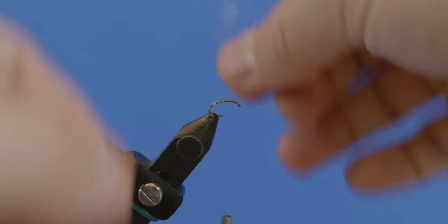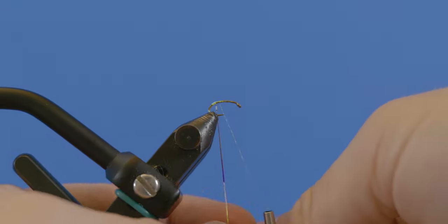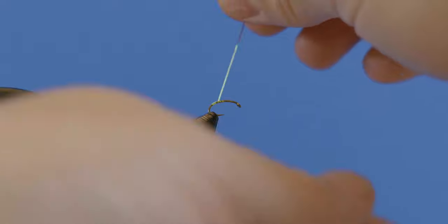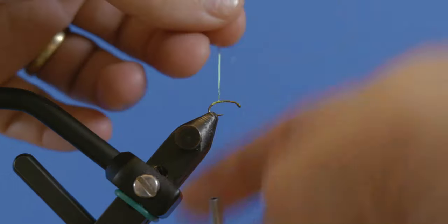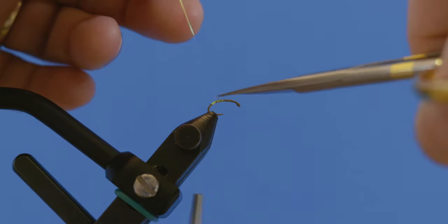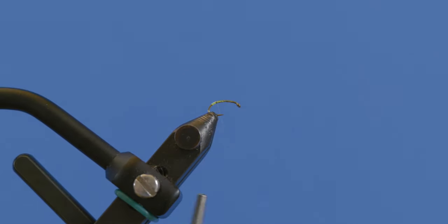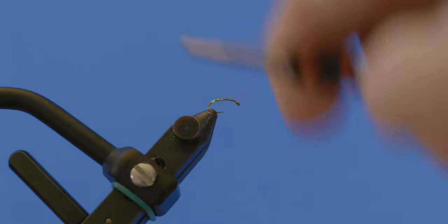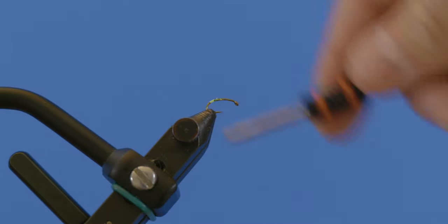Then I'm just going to go ahead and wrap this around. You guys can see this, it's kind of a pain, but we're just going to do like a little bright spot on the butt of the fly. Then we'll go ahead and capture that with the thread and kind of go down and then back up. Trim that off, make sure to clean up whatever's left there.